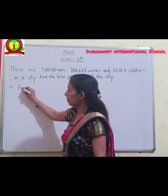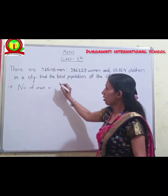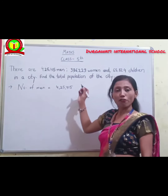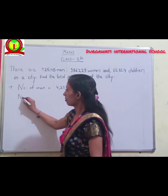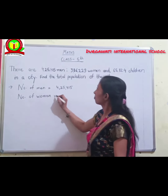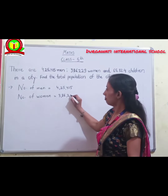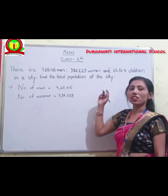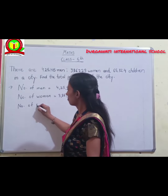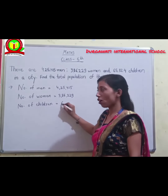So, number of men: 4,25,415. Number of women: 3,86,229. Number of children in a city: 65,324.